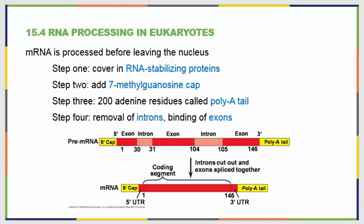In step 3, we tack on about 200 adenine residues, referred to as the poly-A tail. In step 4, we remove the introns or intervening sequences from the mRNA and bind all the exons together. It might seem odd to spend time coding for introns, but this splicing — called alternative splicing — allows more variability in our potential RNA, making our genes more complex and allowing us to do more with them.